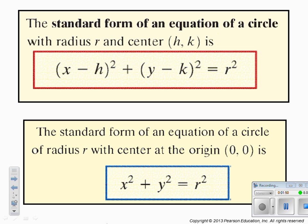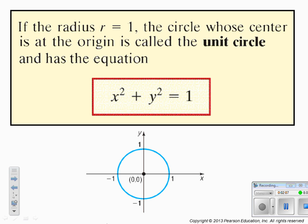For the standard form of the equation of a circle with radius r and center at the origin, the h and k go away and you just have x squared plus y squared equals r squared. When your radius is equal to one, this is called a unit circle, so x squared plus y squared equals one is a circle with its center at the origin and a radius of one. We are going to use this concept a lot later in the chapter — definitely write this down, put a box around it, star it, and note that we will use this later.